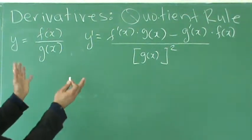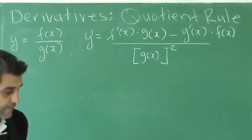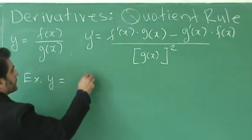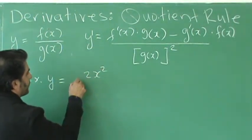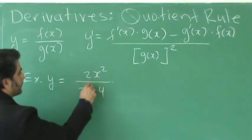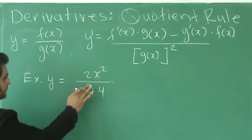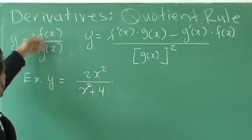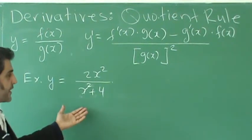So let's apply this in an example. For example, we have y equals 2x squared over x squared plus 4. Just to make it a little bit interesting. So consider the top as f of x and the bottom as g of x.